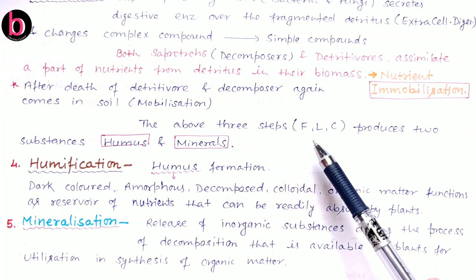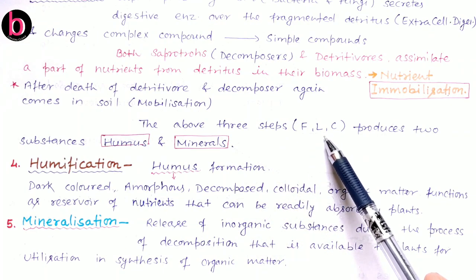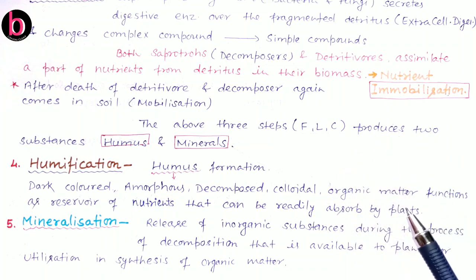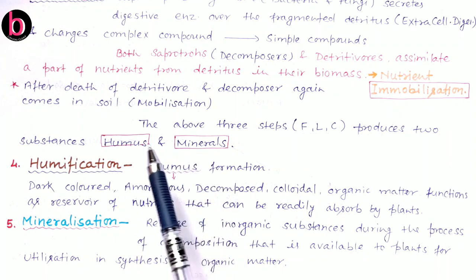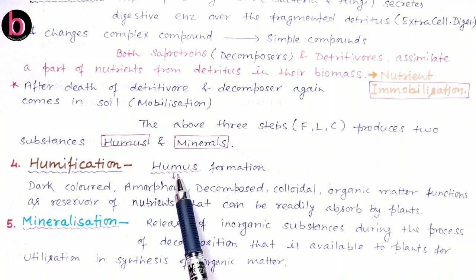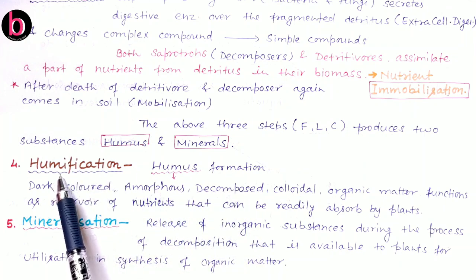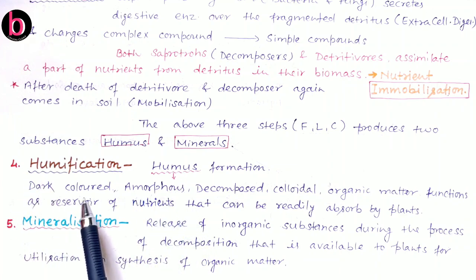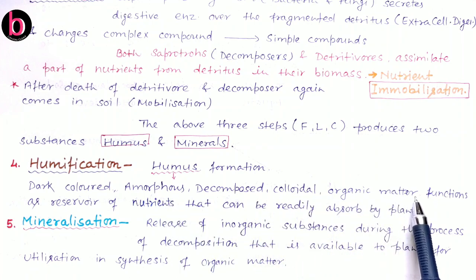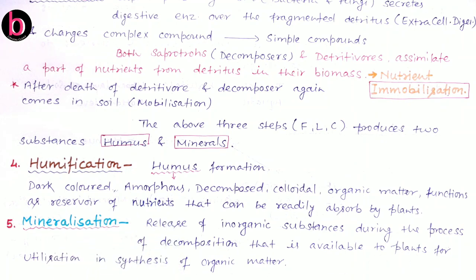The above three steps — fragmentation, leaching, and catabolism — produce two substances: humus and minerals. The process of humus formation is known as humification, the fourth step of decomposition. Humus is a dark-colored, amorphous, decomposed colloidal organic matter that functions as a reservoir of nutrients, which can be readily absorbed by plants for their photosynthesis.